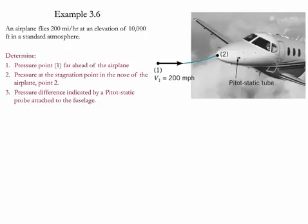We need to determine the pressure at point 1 far ahead from the airplane. We also need to determine the pressure at the stagnation point at the nose of the airplane, point 2, and we need to determine the pressure difference indicated by the pitot-static probe attached to the fuselage.